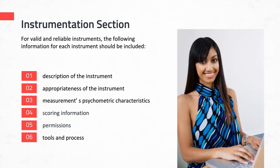Next, talk about the appropriateness of the instrument. This includes support for why you can use it with the population you selected for your study. If you're studying adults, why is it appropriate for adults? If you're studying adolescents, why is it appropriate for adolescents? This also includes the selected setting — for example, if you're administering it online to online students, has it been used with such a population? In discussing appropriateness, you also need to discuss how the instrument conceptualizes the construct in the manner that you conceptualize it for your research.